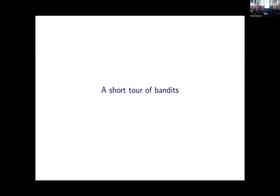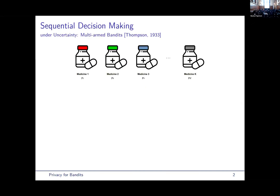So let's start with a short tour of bandits. Multi-armed bandits are a model for sequential decision-making under partial information. They were introduced by Thompson back in 1933 as a simple way to model clinical trials.